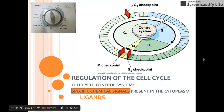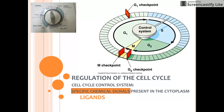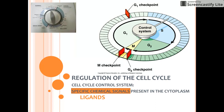We're going to do some notes on the regulation of the cell cycle. There are a lot of chemical signals that go into this; we're only going to talk about a couple. We're going to have to think about cell signaling when we take notes and think about this. Remember, there are lots of chemical signals which we call ligands, and we're just going to discuss a couple of those.